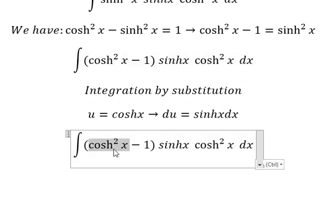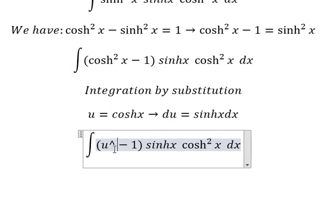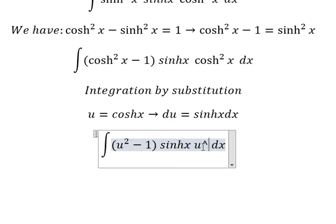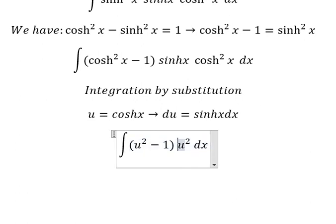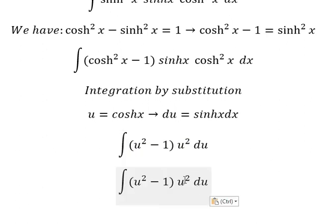So cosh²x we change by u and we have u². This (cosh²x minus 1) becomes (u² minus 1). Sinhx dx we change by du. So we have (u² minus 1) multiplied by u².